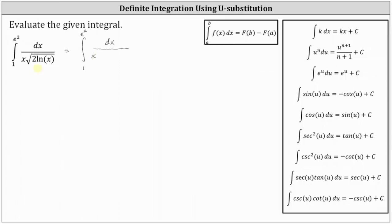The square root of 2 natural log x is equivalent to 2 natural log x raised to the power of 1 half. Now from here, because 2 natural log x is raised to the power of 1 half, as well as because the derivative of natural log x is in the form of 1 divided by x, we will let u equal 2 natural log x.